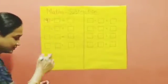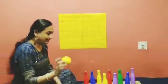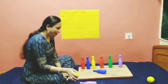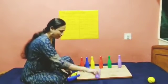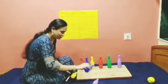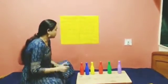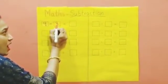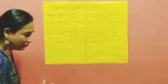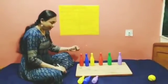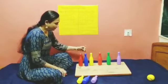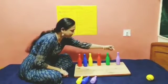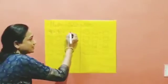So here total bottles are 9. Let's throw the ball and see. How many bottles fell down? 1, 2, 3 bottles. So minus 3. Out of 9, 3 bottles fell down. So how many are left? 1, 2, 3, 4, 5, 6. 6 bottles left.